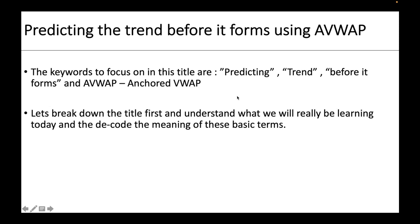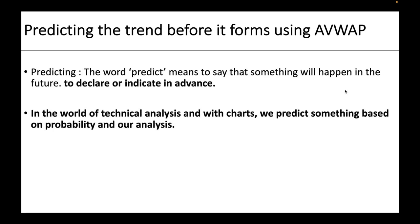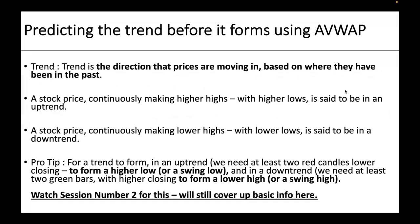The first word is 'predict' — to say that something will happen in the future, to declare or indicate in advance. In technical analysis we predict something based on probability of our analysis. The second word is 'trend' — trend is basically the direction that prices are moving in, based on where they have been in the past. There are primarily two types of trend: uptrend and downtrend.